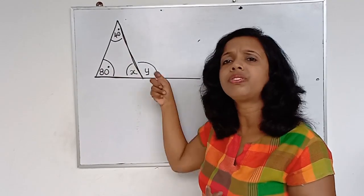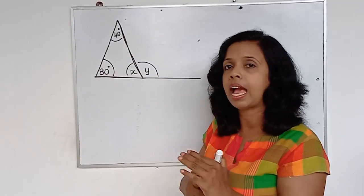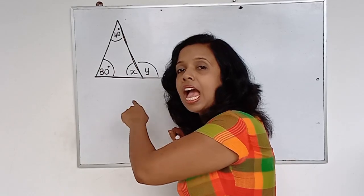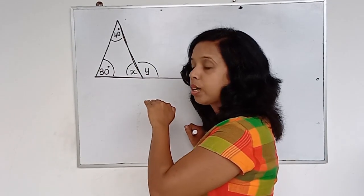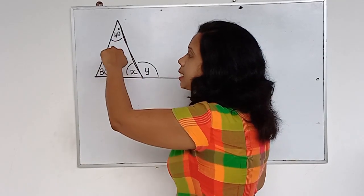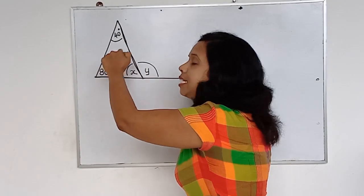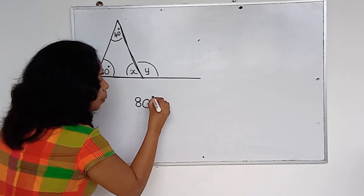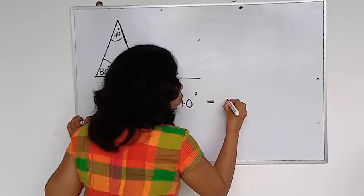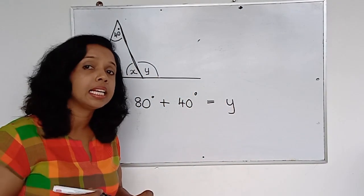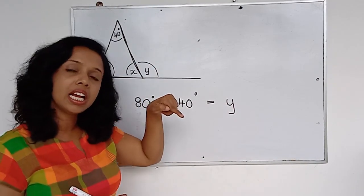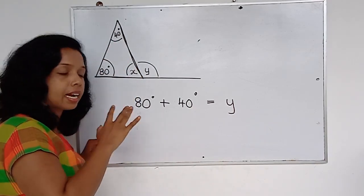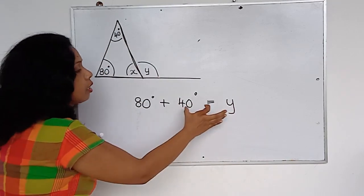So here is the theory: the external angle of a triangle equals the sum of the internal opposite angles. This is the external angle — I created it by extending one side. That external angle will be equal to the sum of the internal opposite angles. So according to that theory, 80 plus 40 should equal y.